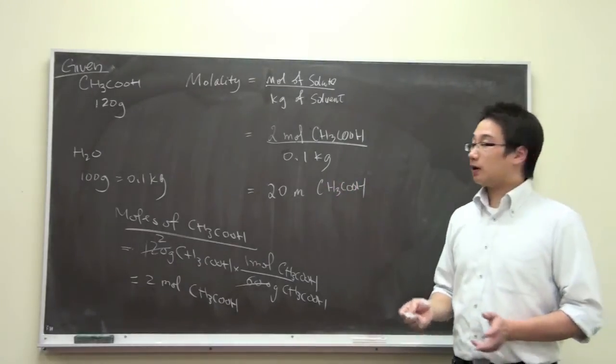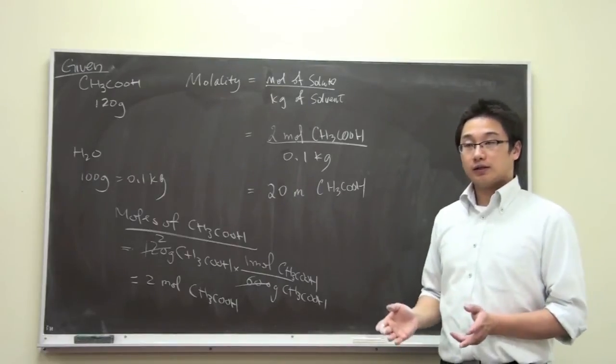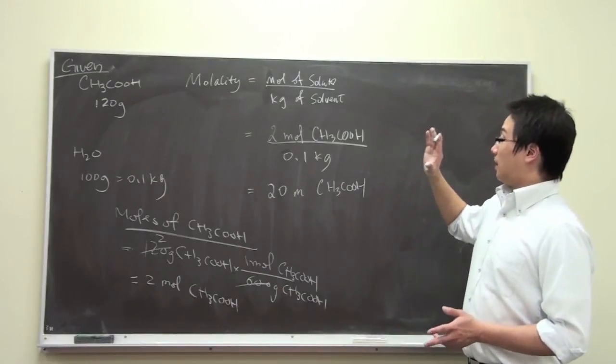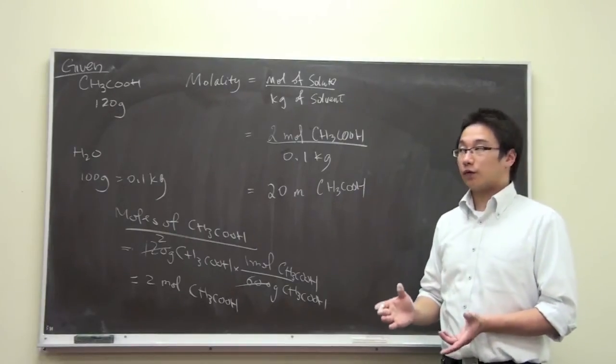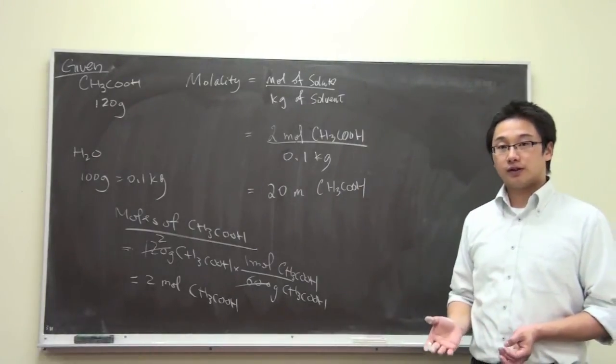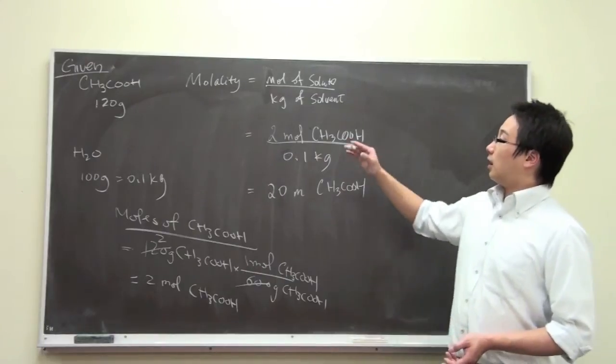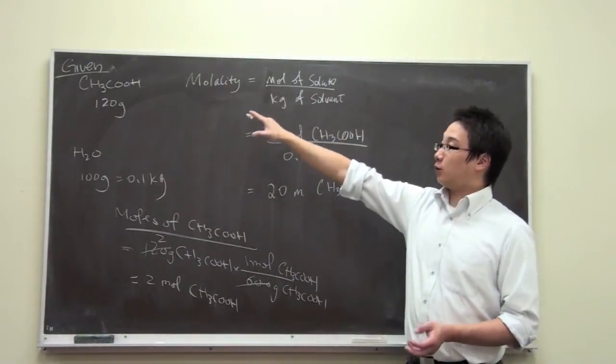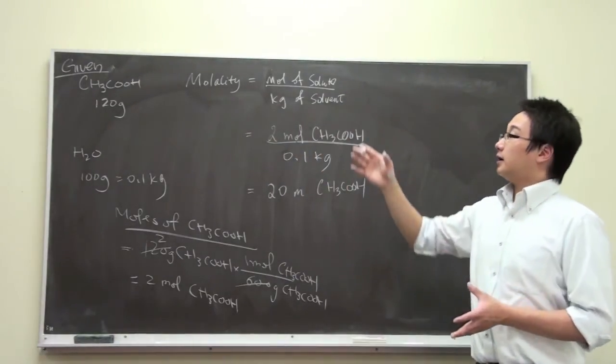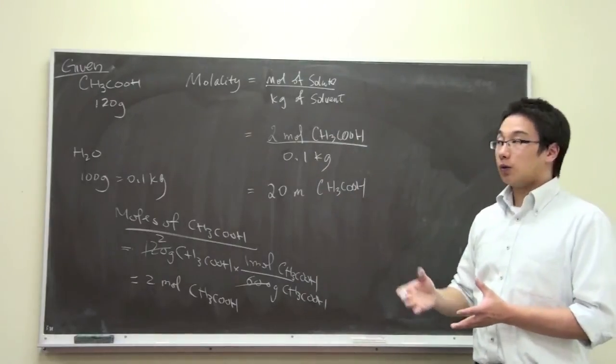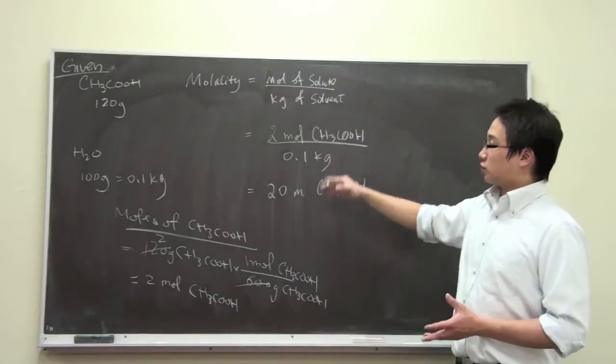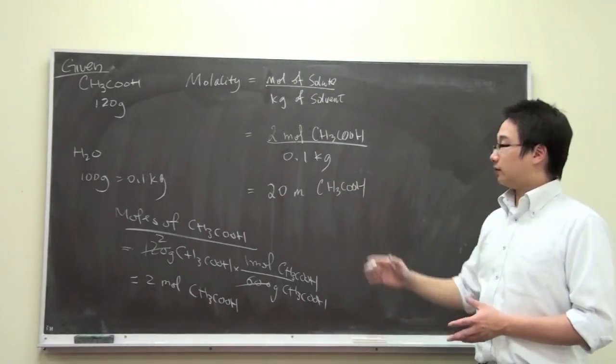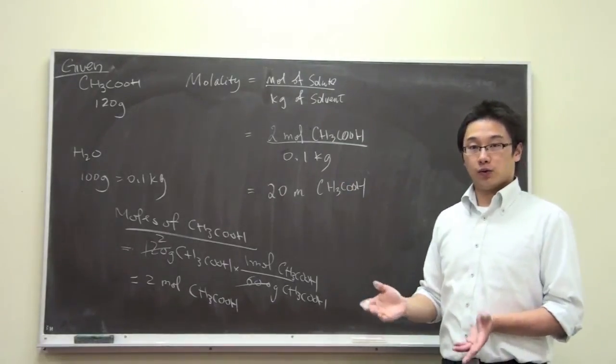The major thing in this type of question is that the equation is moles of solute over the kilograms of solvent. You can simply identify that we are trying to dissolve acetic acid into water, so we know what is solute and what is the solvent. You just need to make sure the moles and the kilograms are correct and you'll get the correct answer.